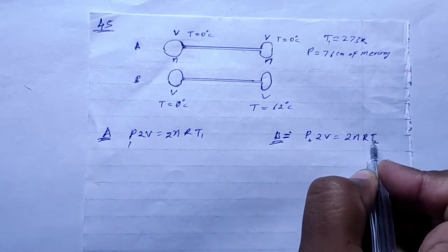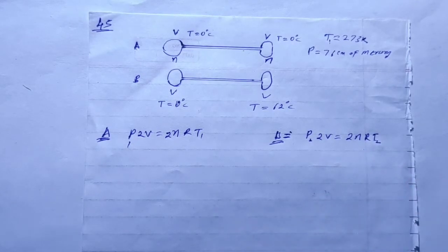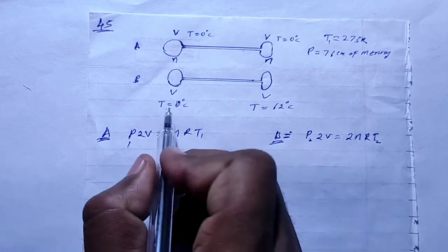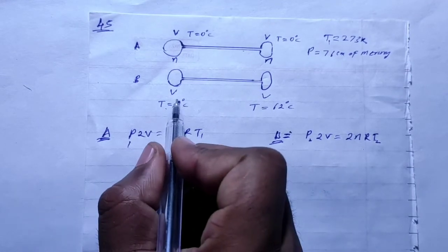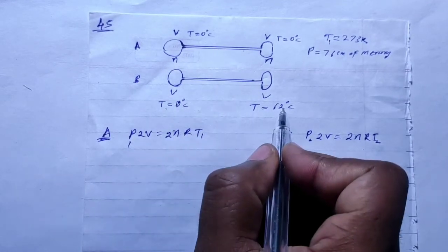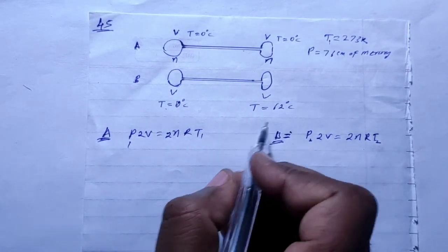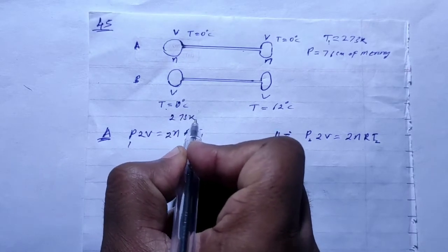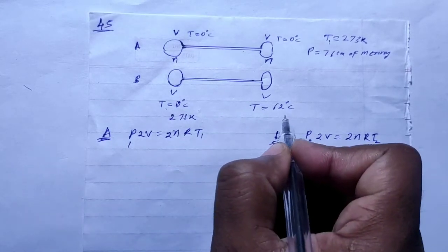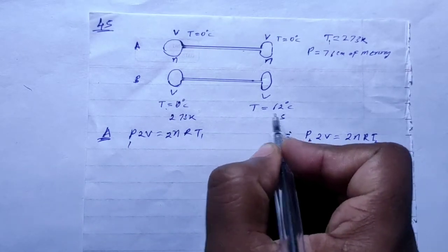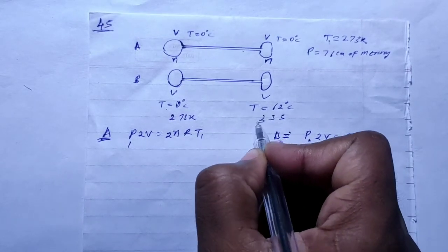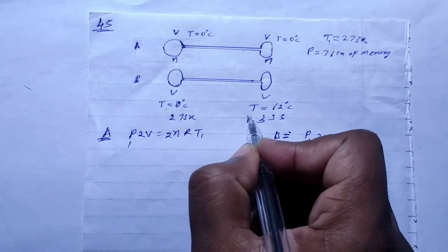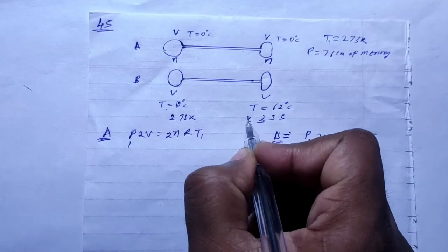We need to find the combined final temperature T2 and pressure P2. The individual temperatures are: one bulb is at 0 degrees Celsius, which is 273 Kelvin, and the other is at 62 degrees Celsius, which is 335 Kelvin.